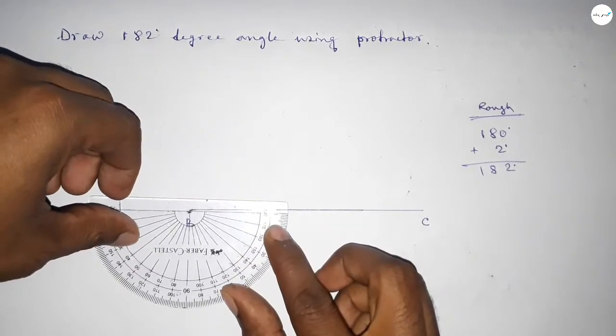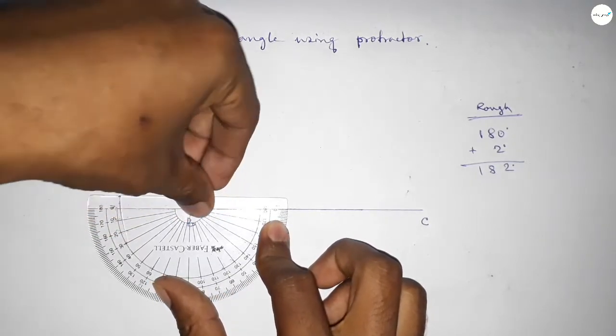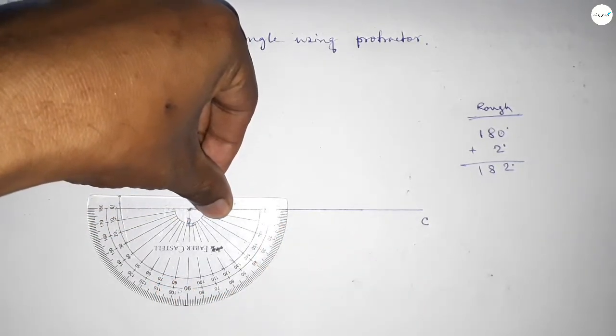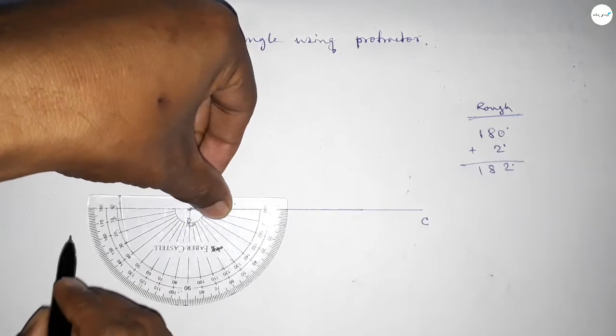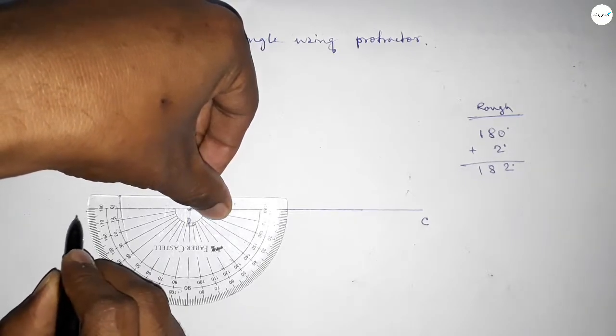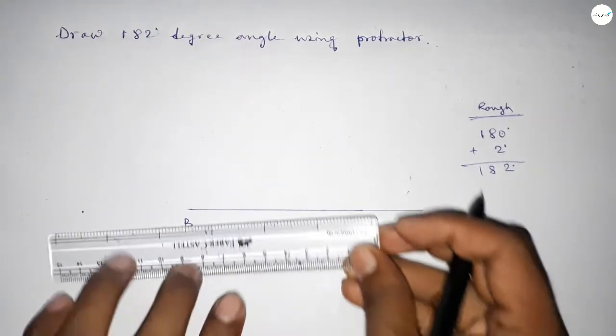Now we reposition the protractor on point B. This marks 180 degrees, and we add one, two more degrees. By adding this extra 2 degree angle to 180 degrees, we get 182 degrees.